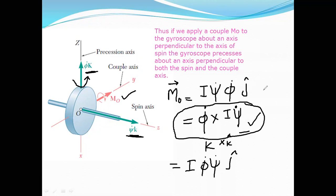This is the gyroscopic precession — the precession of the gyroscope about some axis when a moment is acting about the couple axis. This concludes the steady precession solution. We are left with torque-free motion as one more solution of gyroscopic motion, which we'll cover in the next class. Thank you.